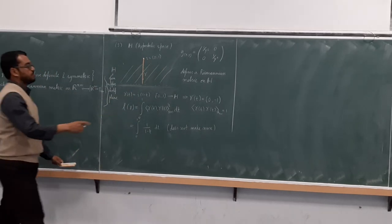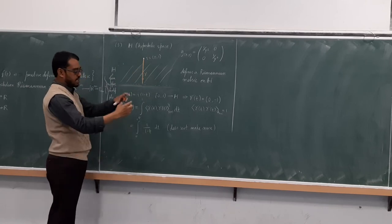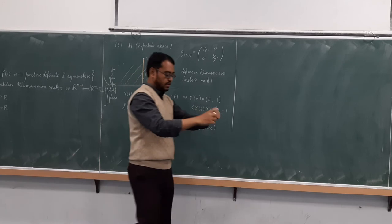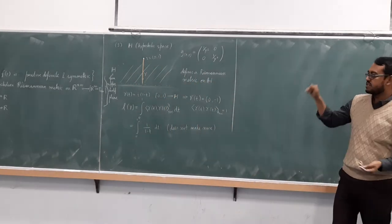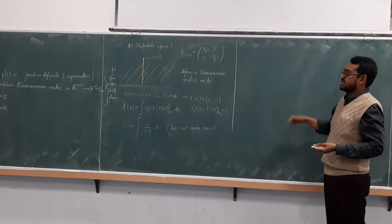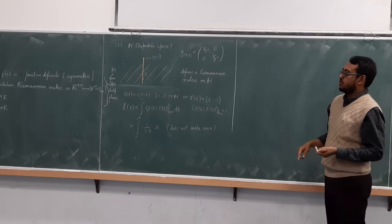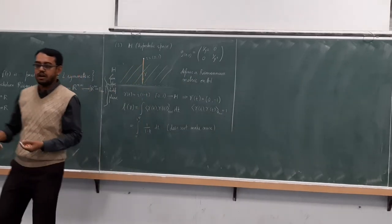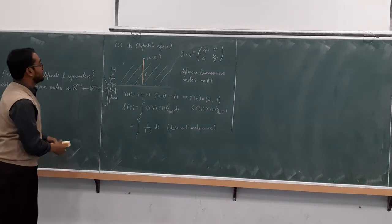If you prefer the disk model, you can do the same calculation there. The disk model is misleading because it looks like a finite closed boundary, but the metric captures how far you are from the boundary, and you are always infinitely far away from it no matter how close it looks.